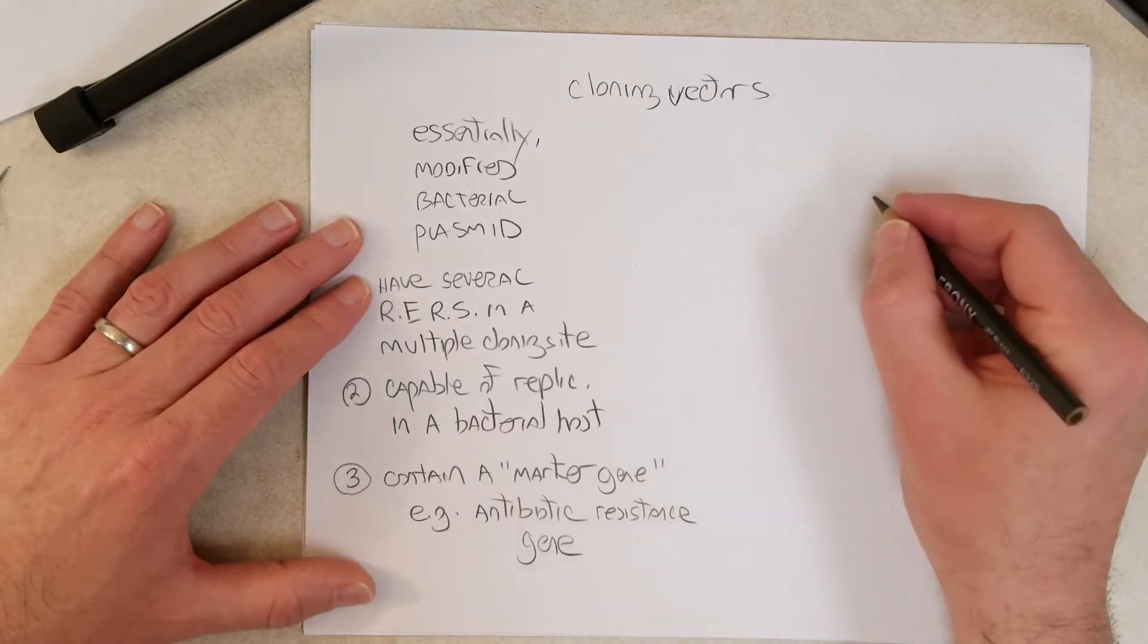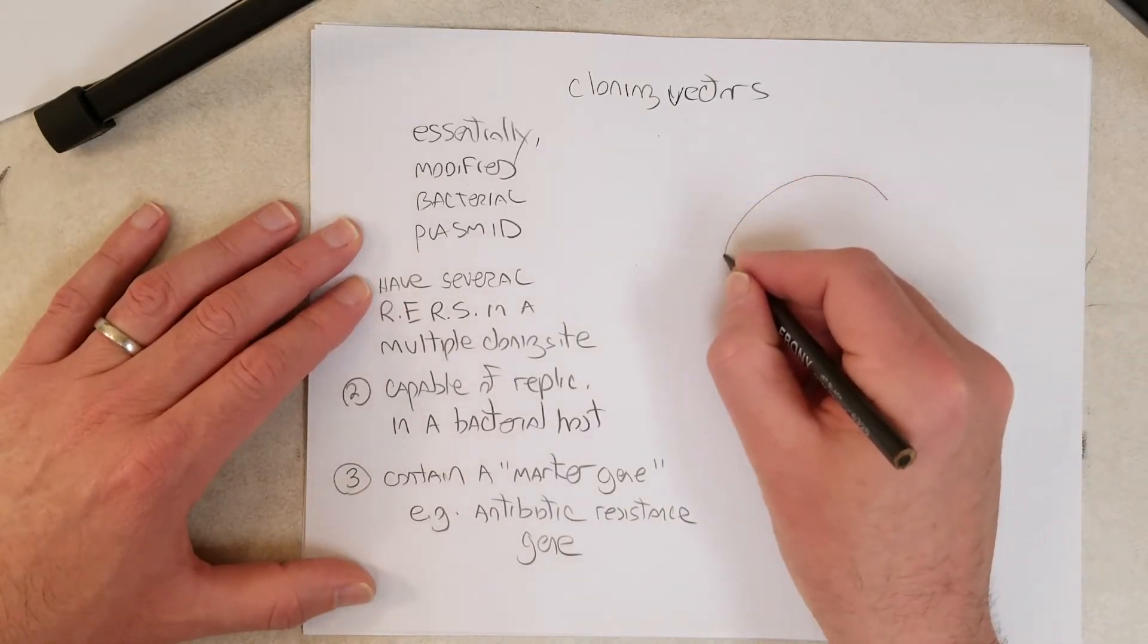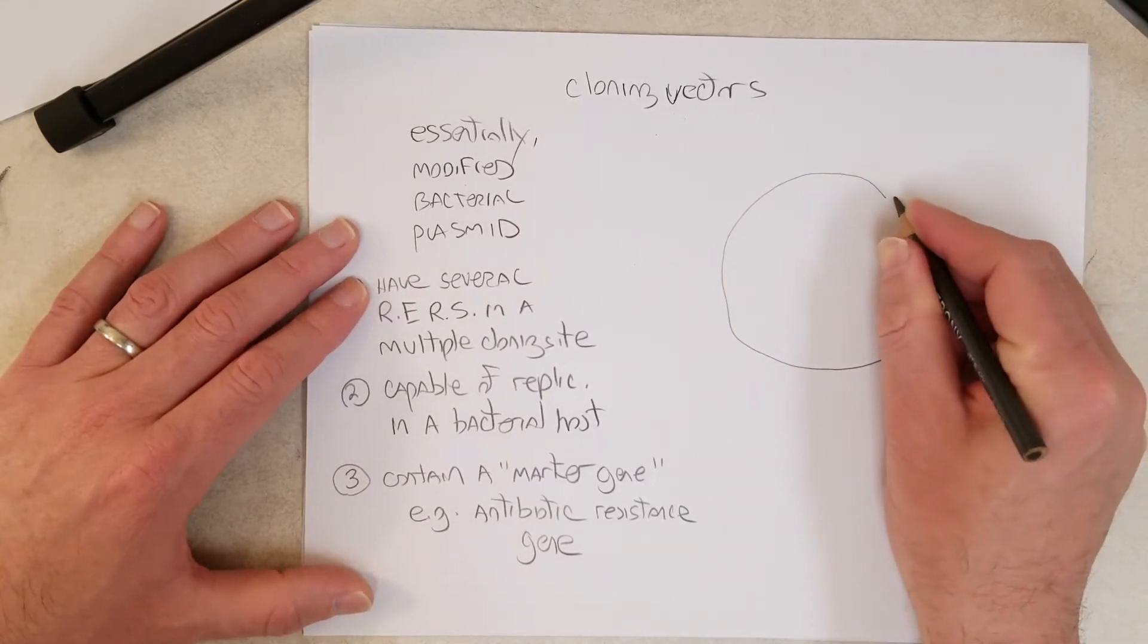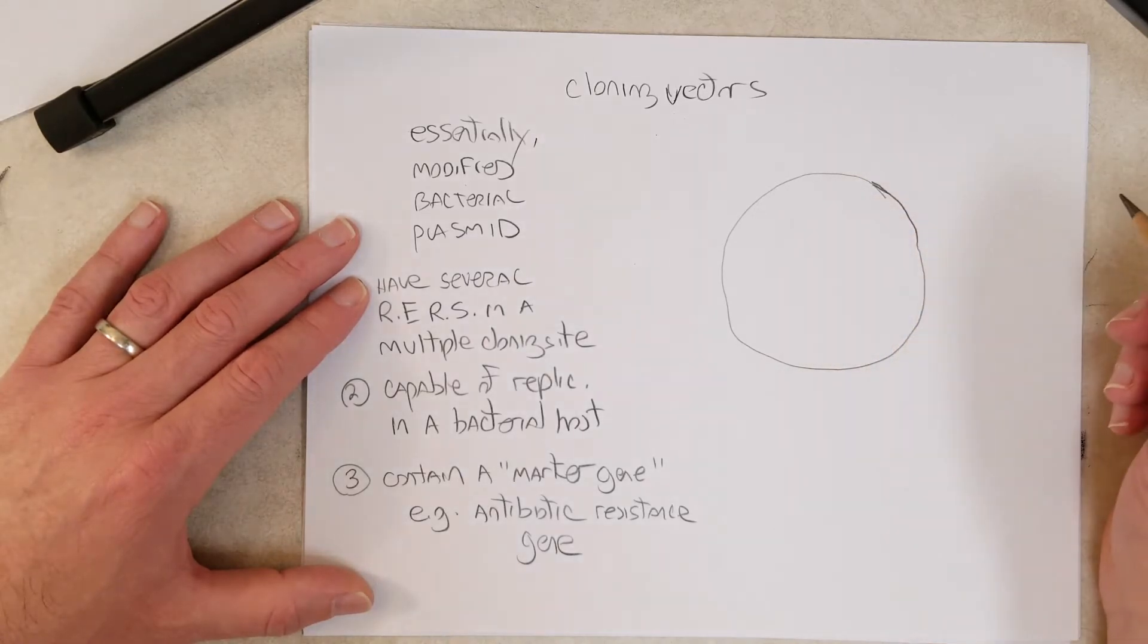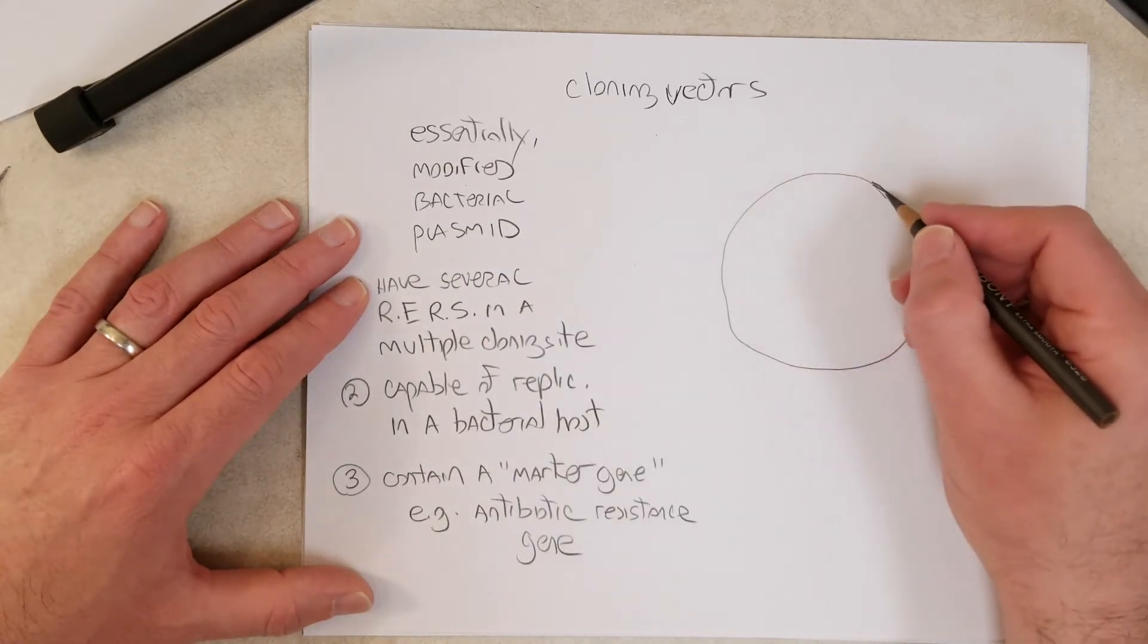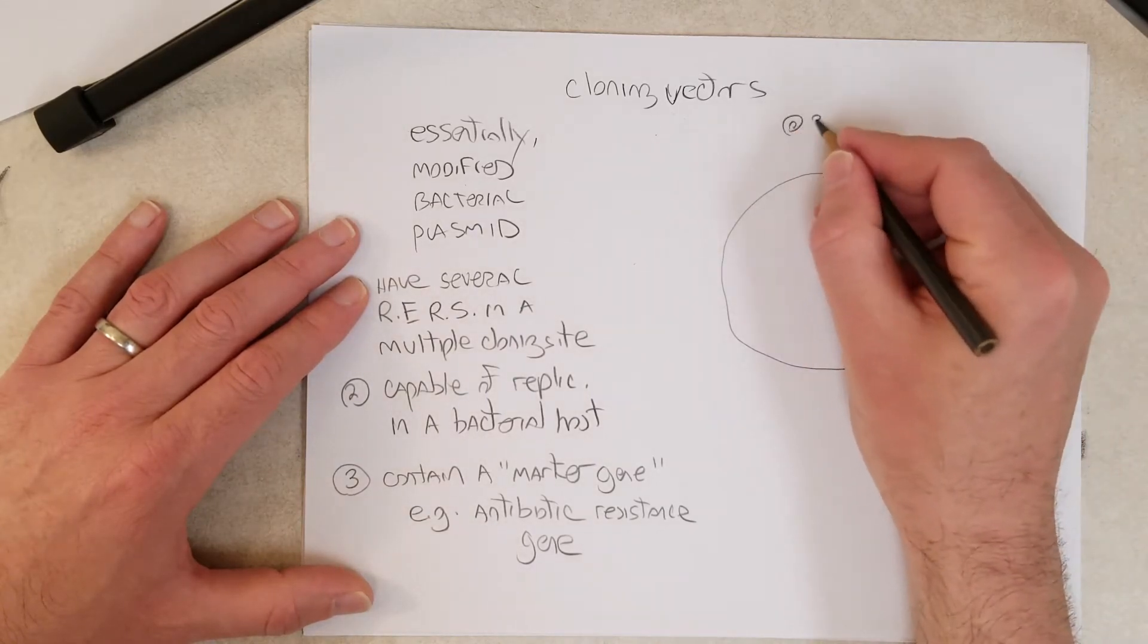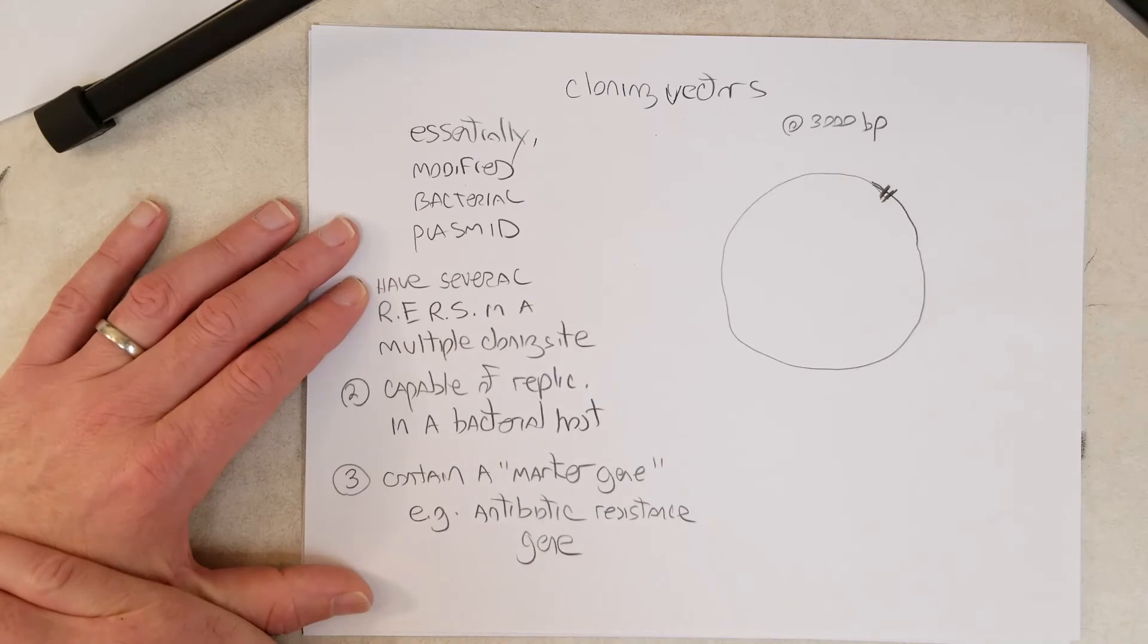Here is a map of a typical cloning vector. Like I said before, they're essentially modified bacterial plasmids. Let's say right here, in this little region, this is about 3,000 base pairs long, and that's a typical length of a common cloning vector.